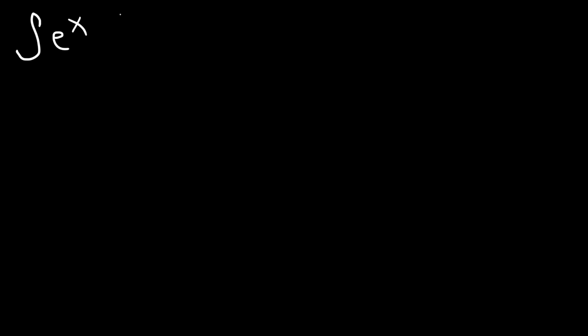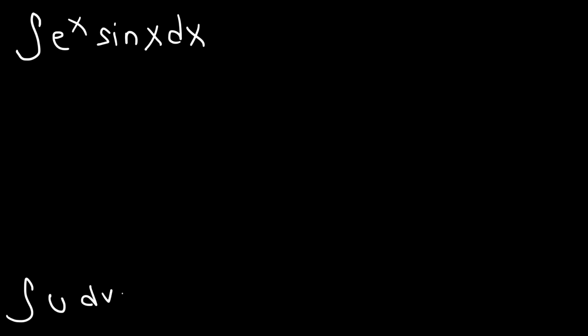In this lesson, we're going to find the integral of e to the x sin x dx. For this problem, we're going to use the integration by parts method. The formula is: the integral of u dv is equal to u times v minus the integral of v du.